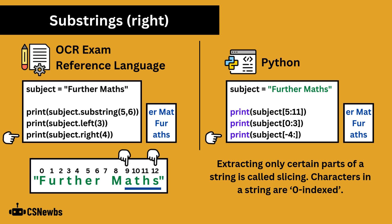The right command in OCR ERL prints a given number of characters from the end of the string. To recreate this in Python, you can write the number of characters as a negative, and then an empty value after the colon, so it will go to the end of the string regardless of how many characters are in that string.